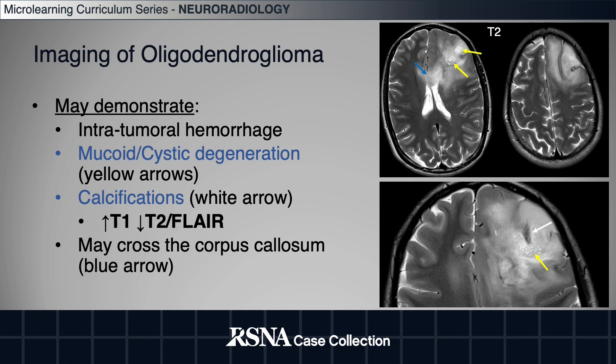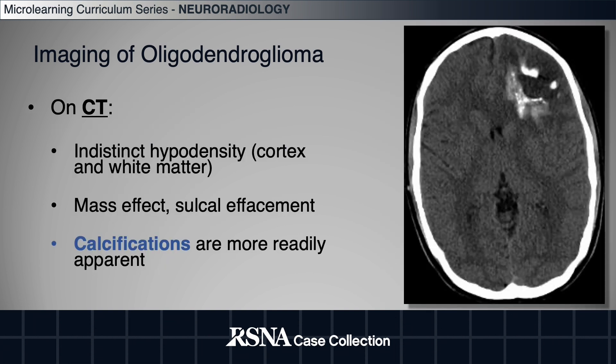As previously mentioned, they can cross the corpus callosum. On CT, the tumor is poorly delineated as indistinct hypodensity with mass effect and sulcal effacement, but an important advantage of CT is the obvious calcifications, which are common in these tumors.